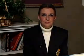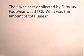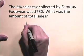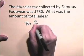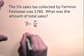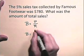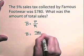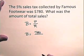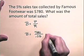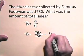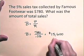Now let's find the amount of sales when the tax amount and tax rate are known. The 5% sales tax collected by Famous Footwear was $780. What was the amount of total sales? The base will be the total sales. Base is equal to part divided by rate. So the base, which is the total sales, will be the part — $780 — divided by the rate, 5%, written as a decimal, 5 one-hundredths. So 780 divided by 0.05 is $15,600 total sales.